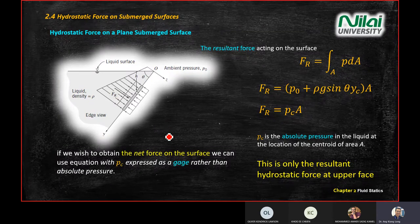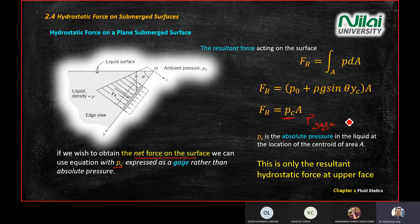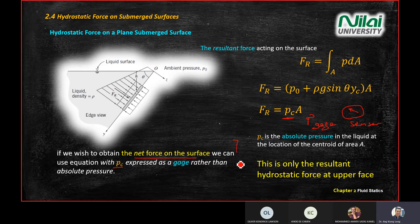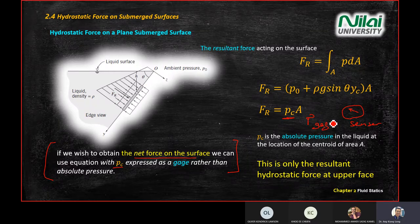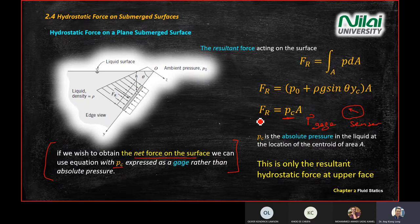As a note: if you want to obtain the net force on the surface, you can use PC in FR = PC·A and straight away use gauge pressure or gauge reading. If you have a pressure gauge that measures pressure, you multiply the reading by the area to get the force. This is a tip when the question asks you to calculate the resultant force and gauge pressure is given.